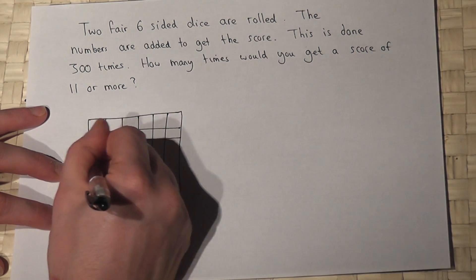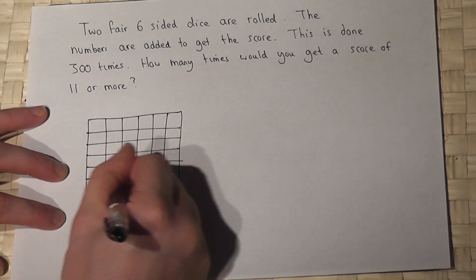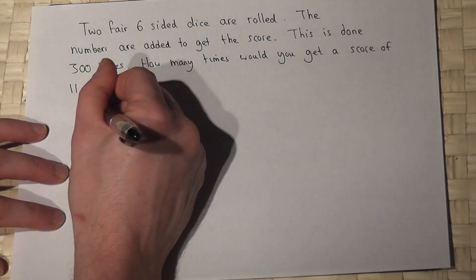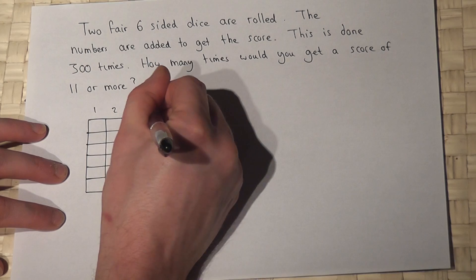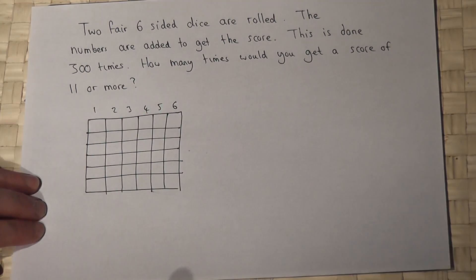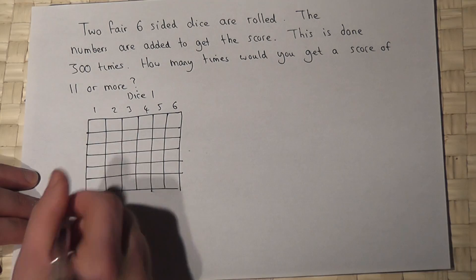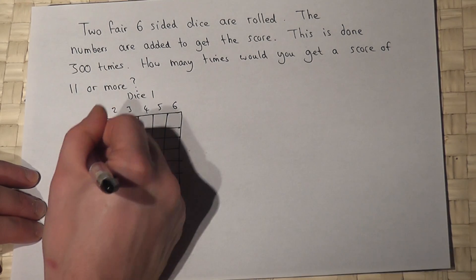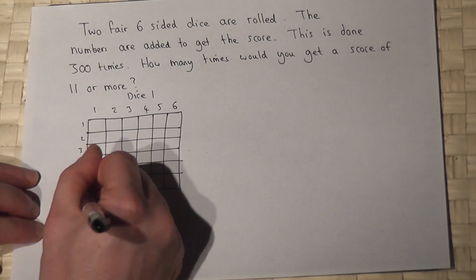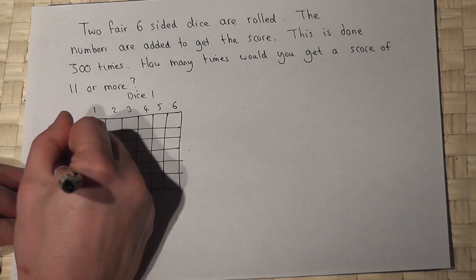So I'll be very quick with this. Now dice one has got a one, a two, a three, a four, a five, and a six. That's dice one. Dice two has also got a one, a two, a three, a four, a five, and a six. So that's dice two.